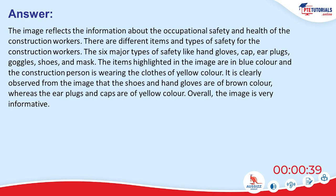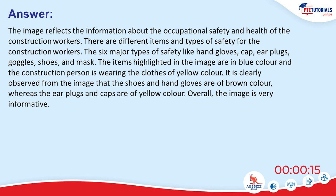The image reflects information about occupational safety and health of construction workers. The six major types of safety equipment are hand gloves, cap, earplugs, goggles, shoes, and mask. The items highlighted in the image are in blue color and the construction person is wearing yellow clothes. The shoes and hand gloves are of brown color, whereas the earplugs and caps are of yellow color.